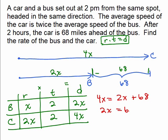So, 2x is 68 divided by 2, x is 34. So, that represents what? X represents the rate of the bus.